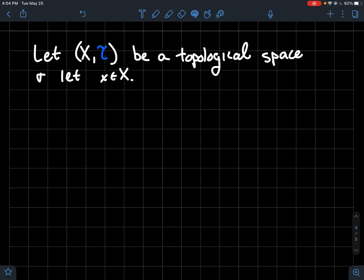So let's let (X,τ) be a topological space. All that means is X is a set and then τ is some bunch of subsets of X that satisfy some special properties to call it a topology, and let's let little x be an element of the set X.